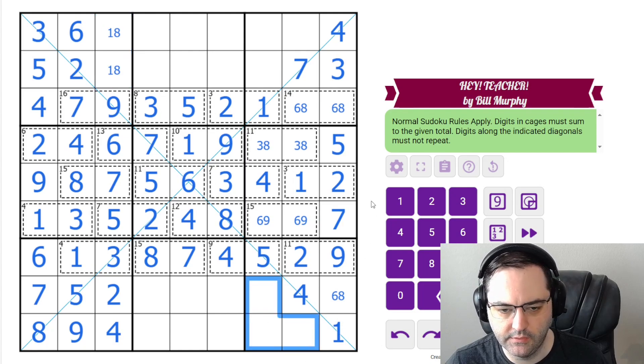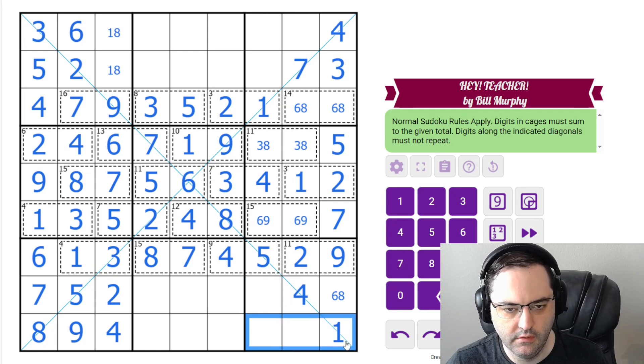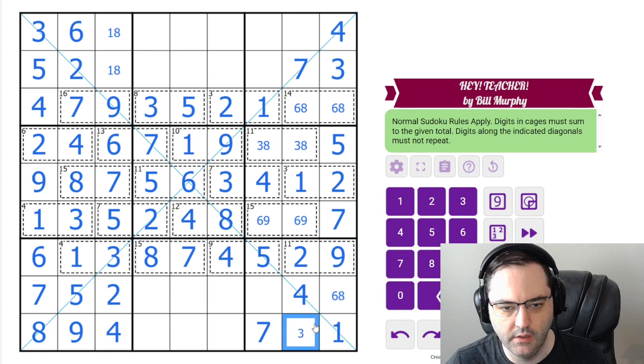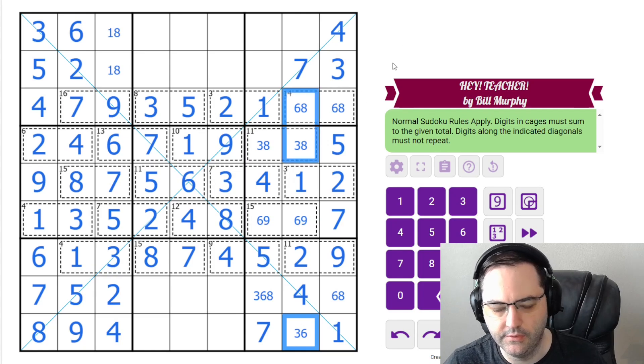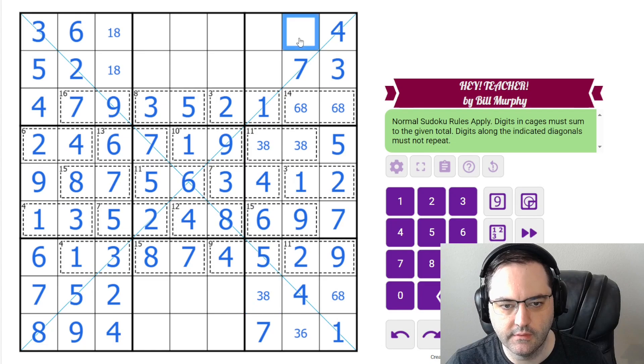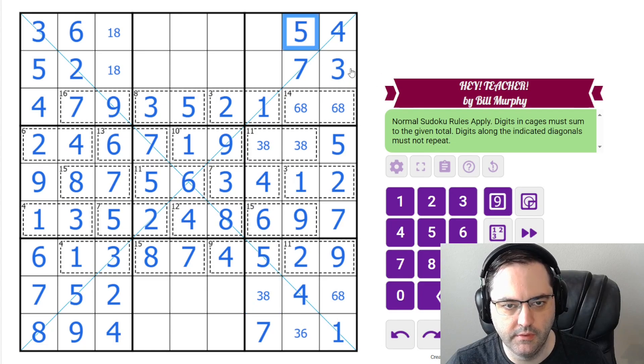In this box, we still need 3, 6, 7, 8. 7 can't go in either of these from the 7s we placed. So this must be the 7. This can't be 8. There's a 3, 6, 8 triple here, so I'm going to use that. This is not 6 now. This must be 5. And then we're going to be left with 2 and 9 here.